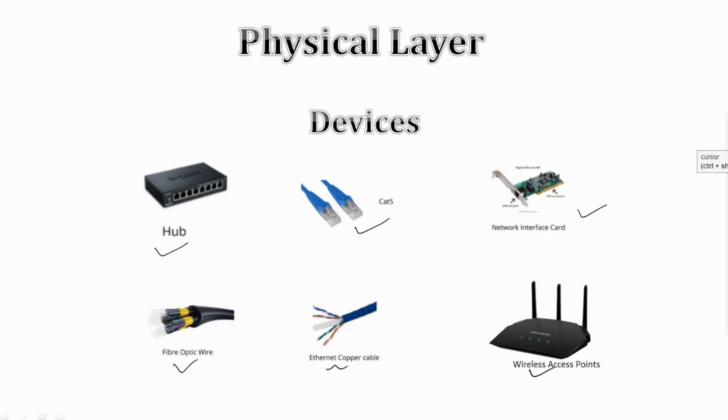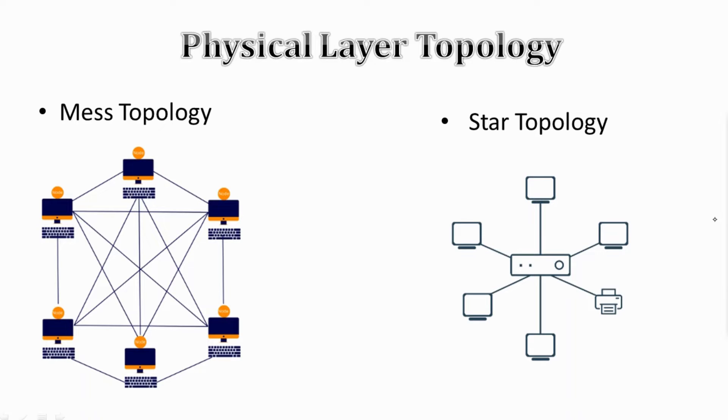Now moving on, we have physical topology. In the physical layer, we have topologies like mesh topology, star topology, bus topology, and ring topology.